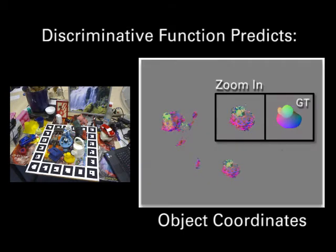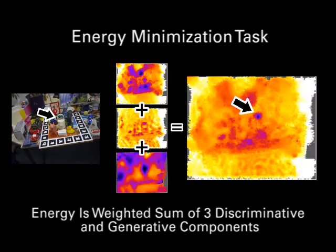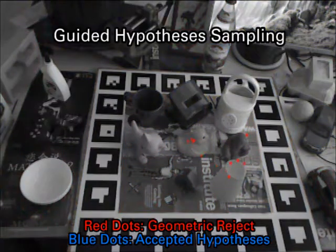Object coordinates are also predicted, conditioned on the object we are looking for. We define an energy on 6DoF pose hypotheses. Estimating poses is done by robust energy minimization.